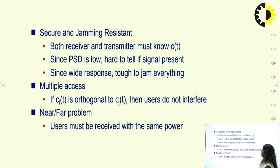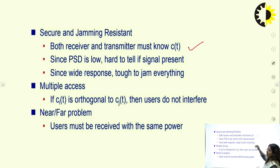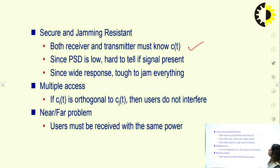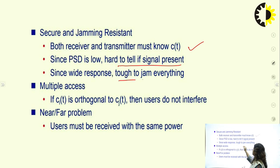DSSS provides secure and jamming-resistant communication. Both transmitter and receiver must know the chipping code C(T) — this is essential, as the receiver cannot demodulate the original data without it. Since PSD is very low, it is hard to tell if a signal is present. Since it has a wide response, it is tough to jam. These are the key properties of Direct Sequence Spread Spectrum.